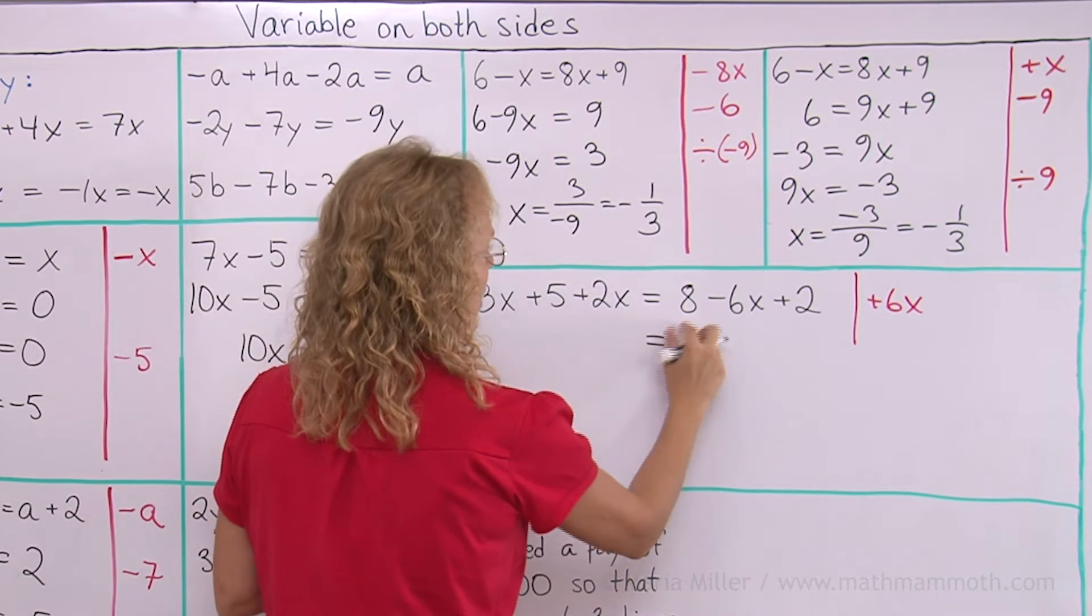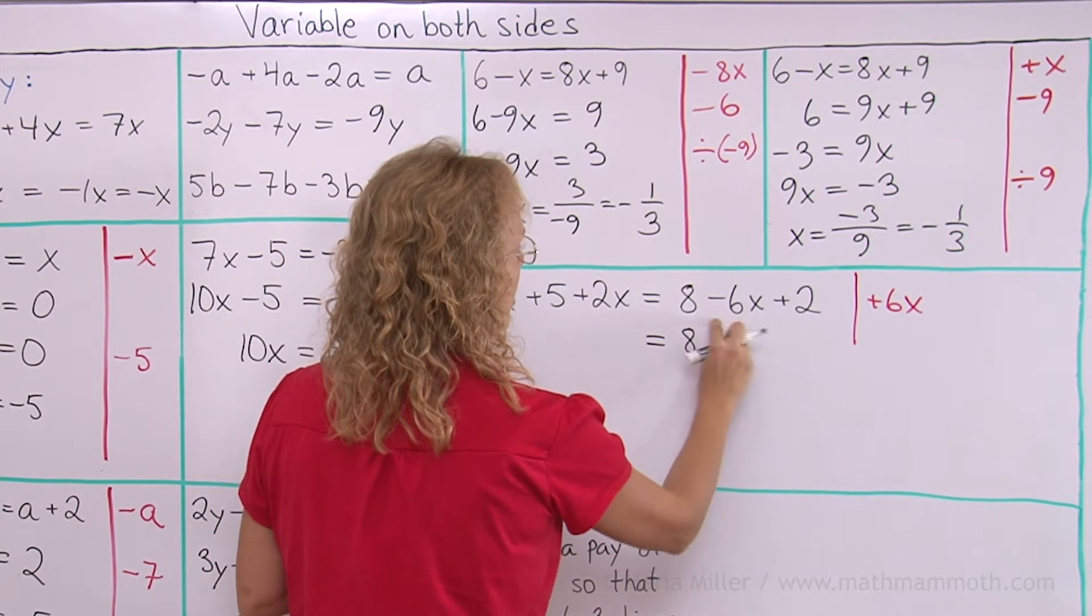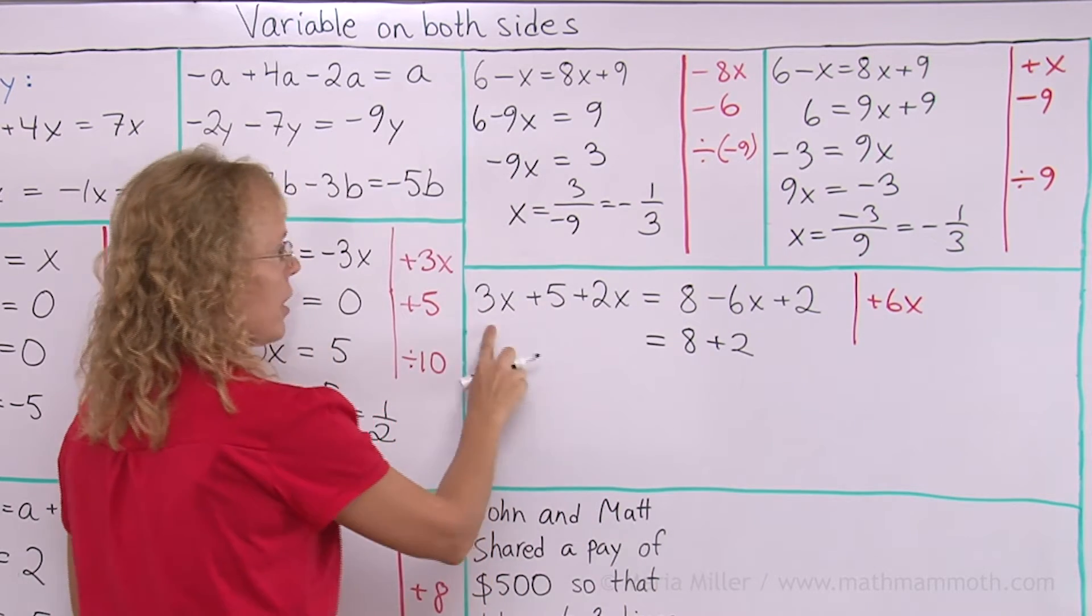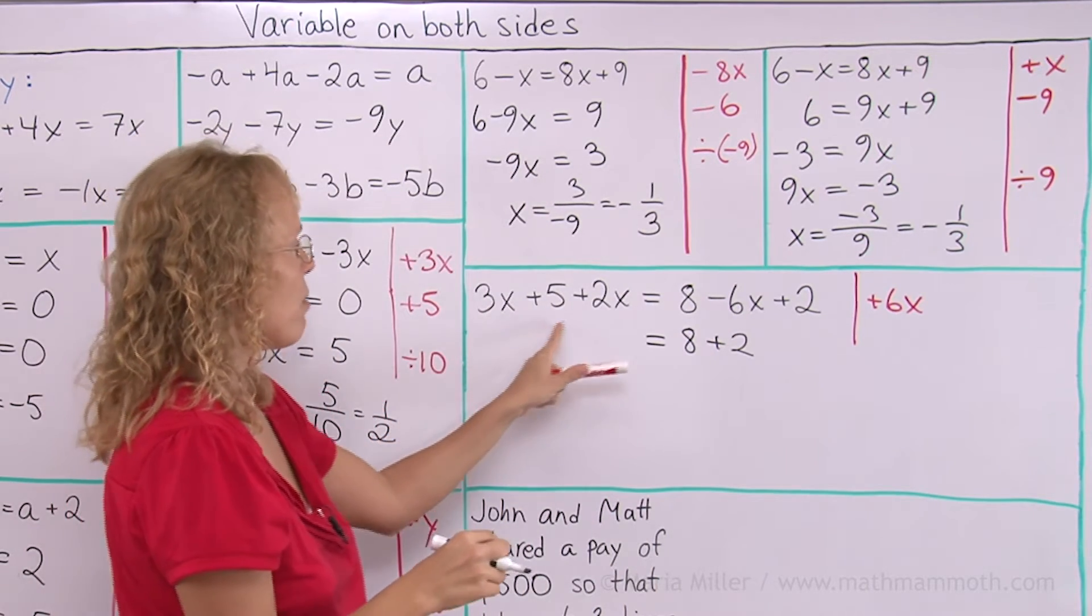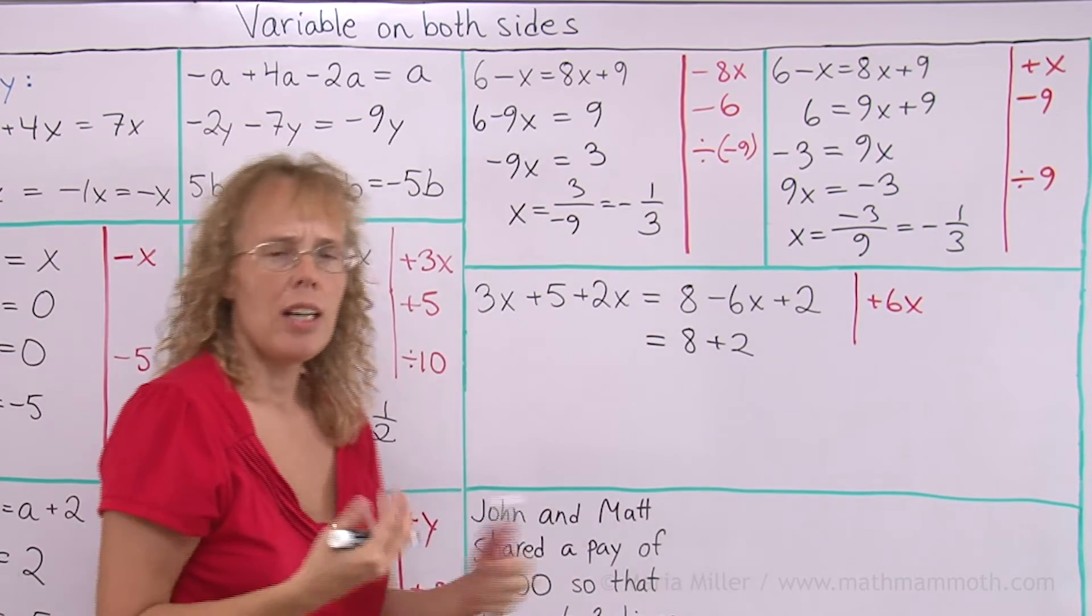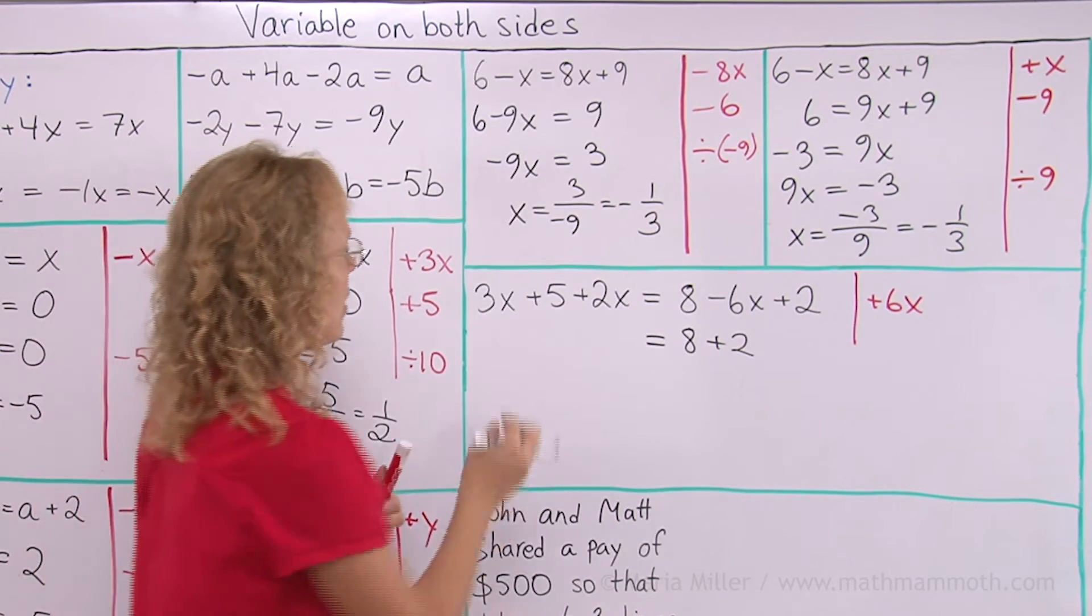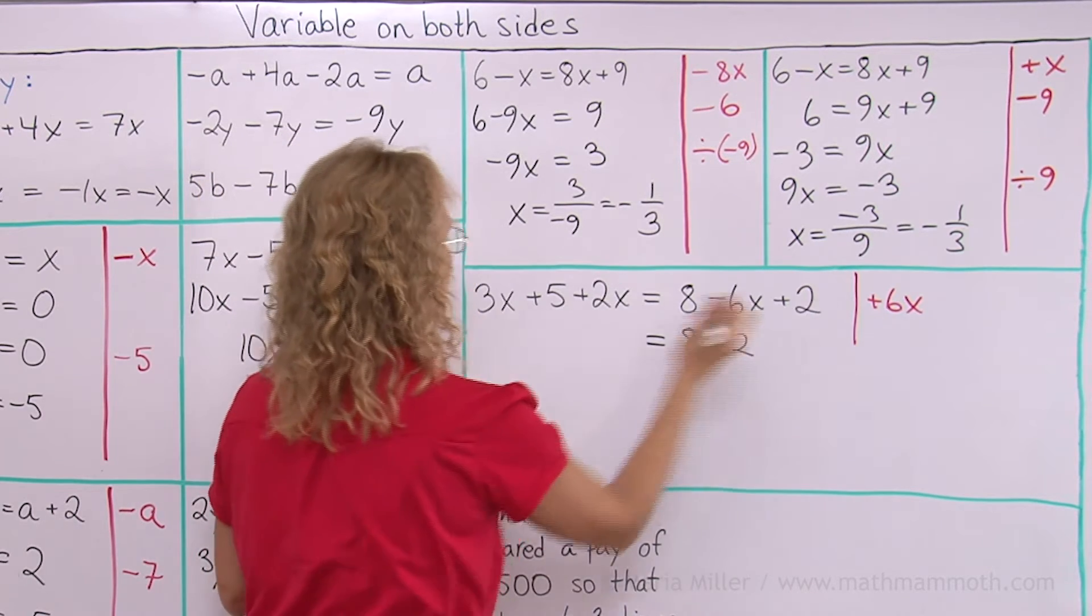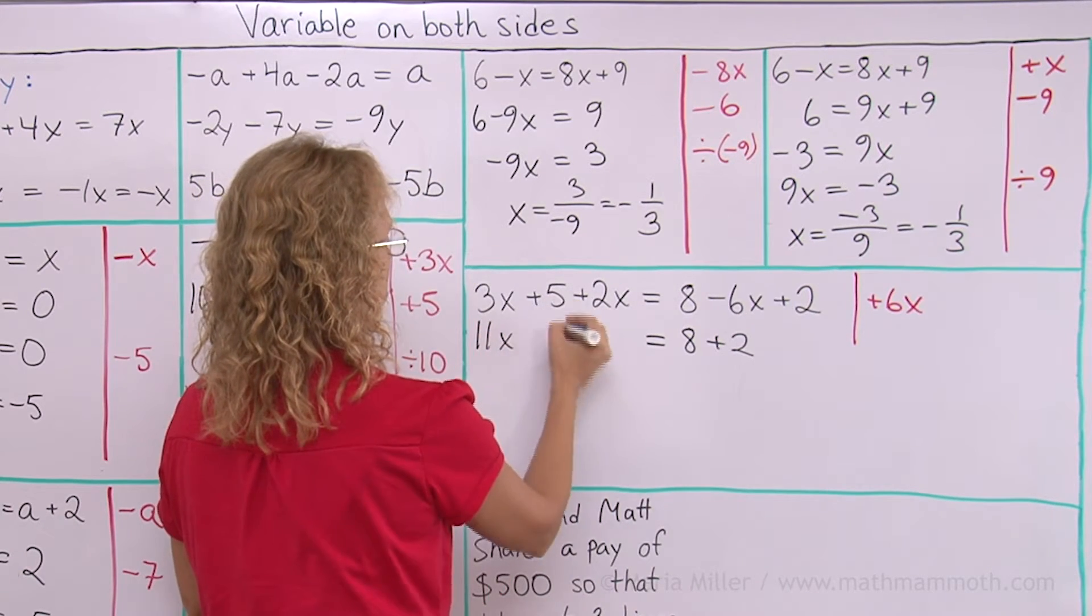So, on this side I will add 8, and that gets cancelled, and then plus 2 is here still. On this side, I have 3x plus 5 plus 2x plus 6x. I could simplify that a little, right? 3x plus 2x is already 5x, then add 6x, so 11x, and then plus 5.